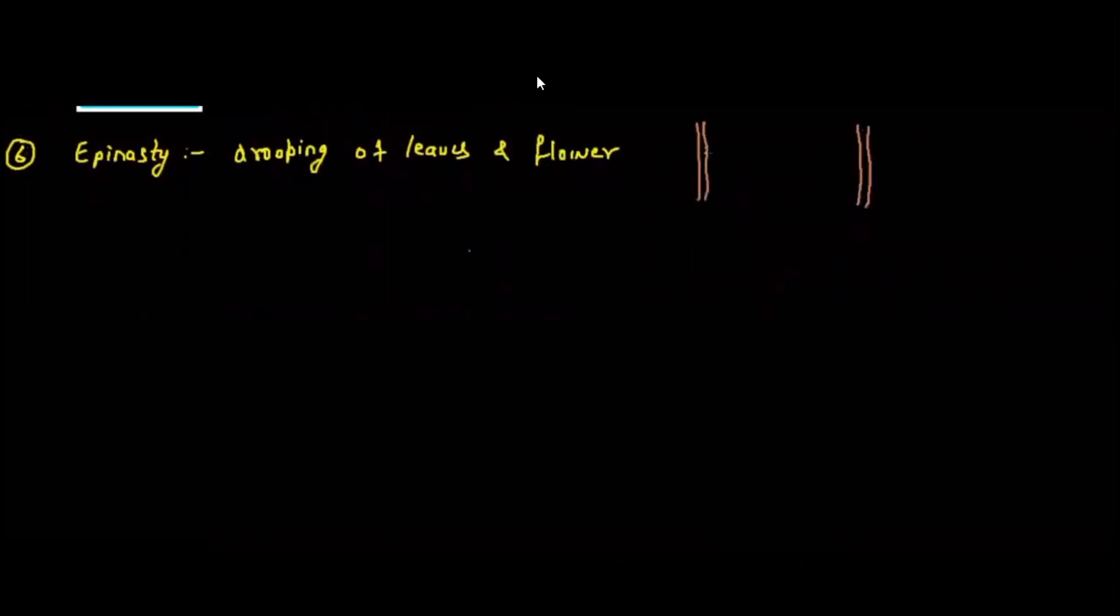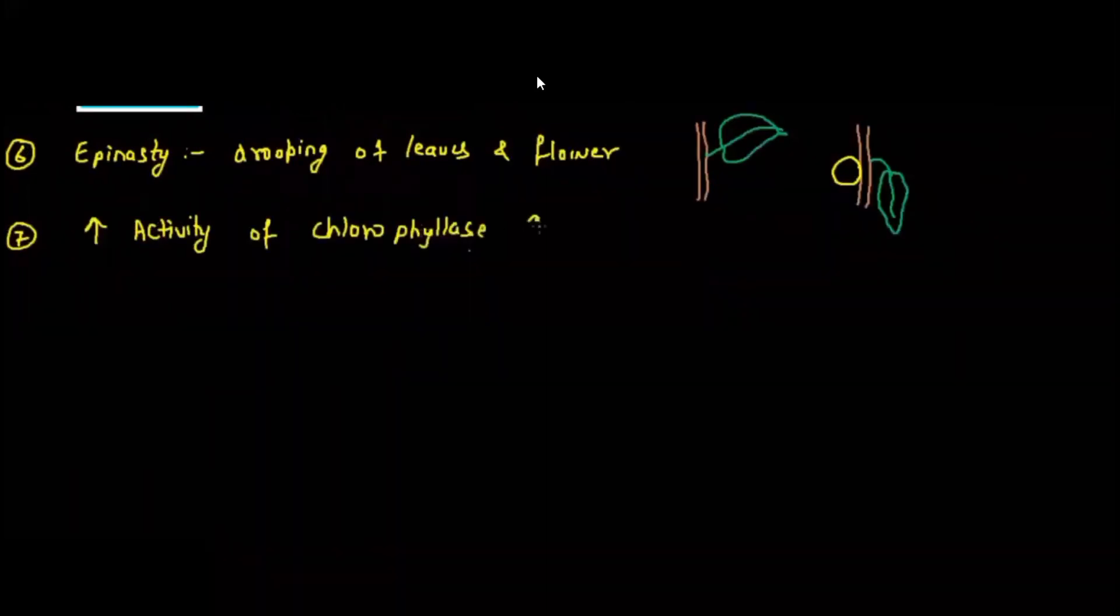Next is epinasty. Epinasty means drooping of leaves and flower. If there is no fruit on the tree, you will see that leaves are very straight. And if there is a fruit, the leaf bends down. So this drooping of leaves and flower is called epinasty.